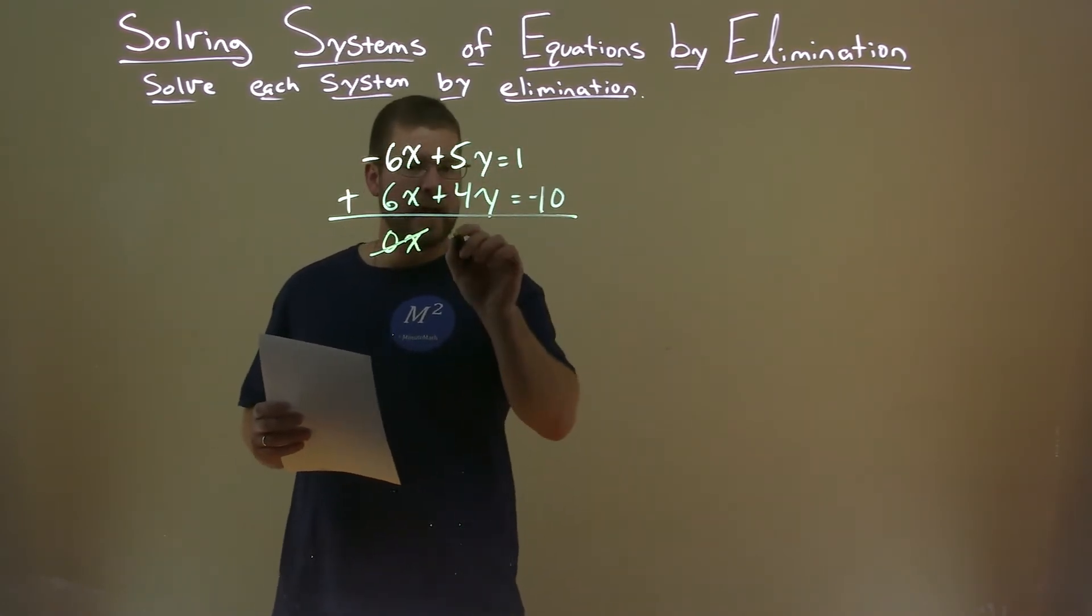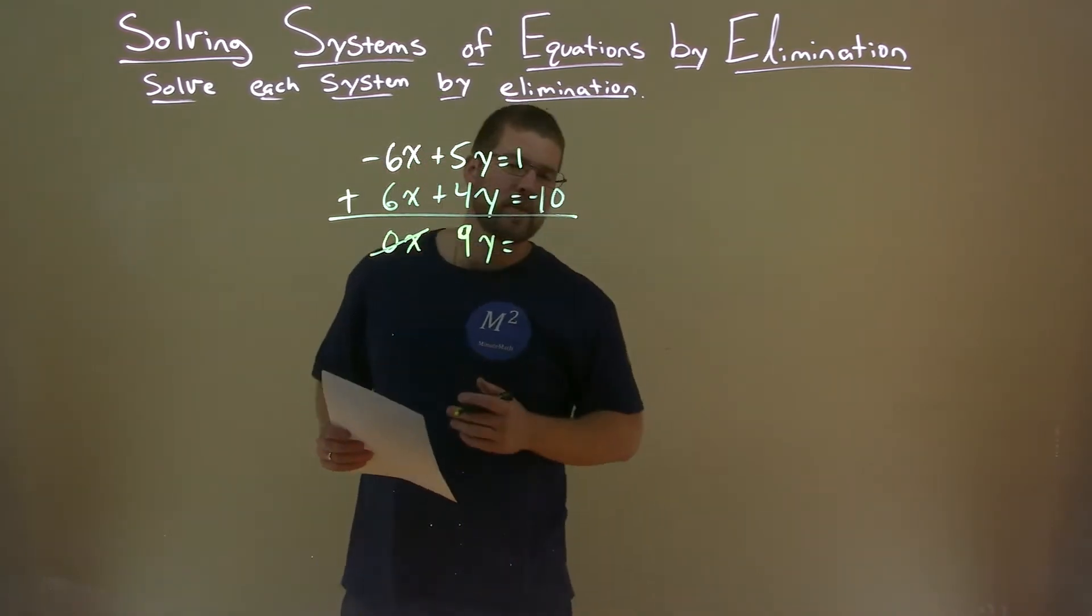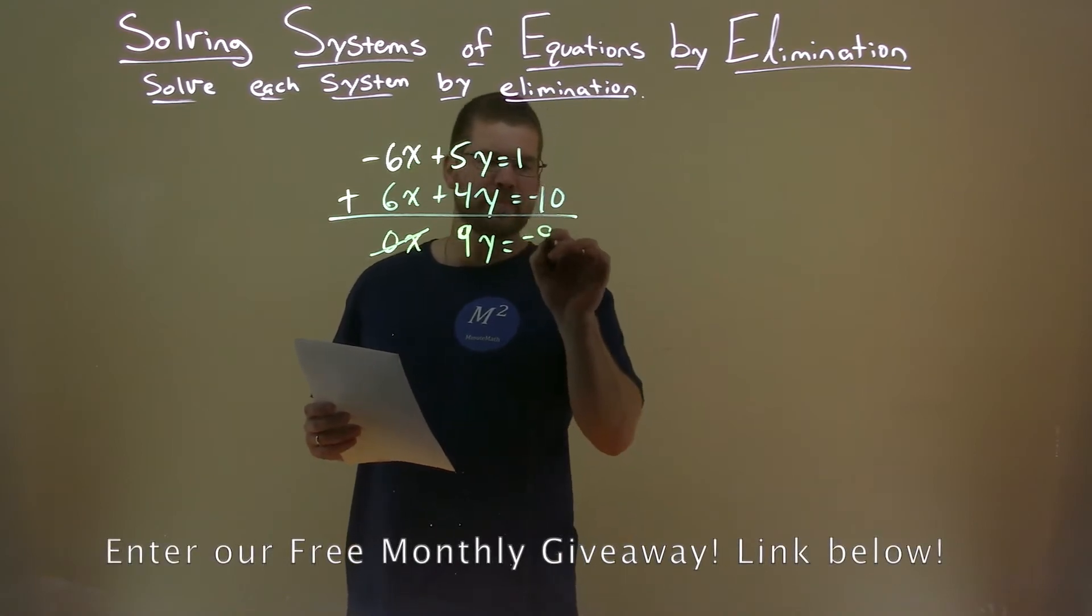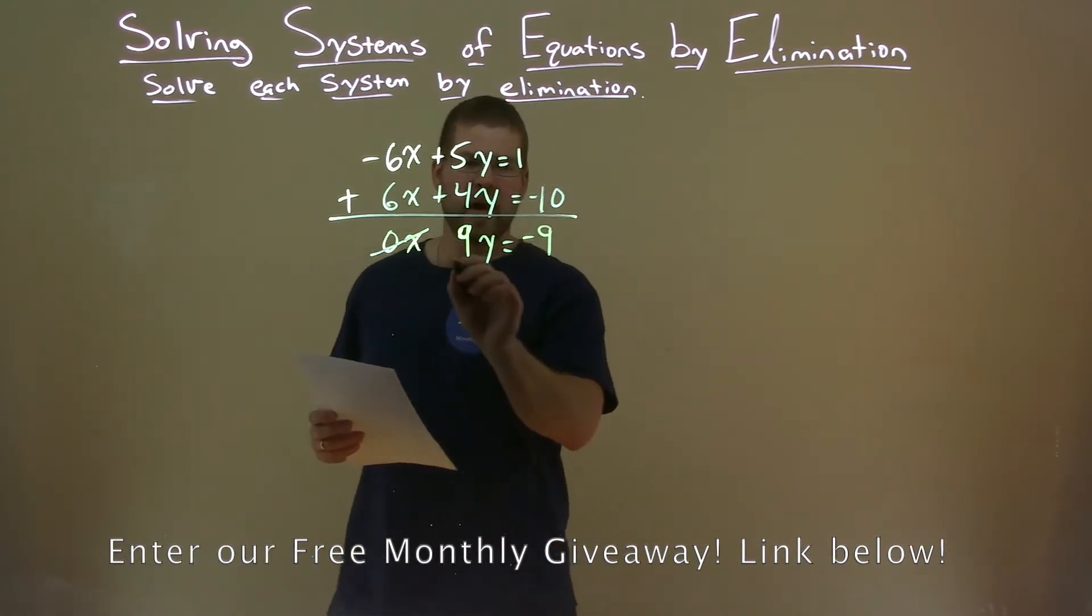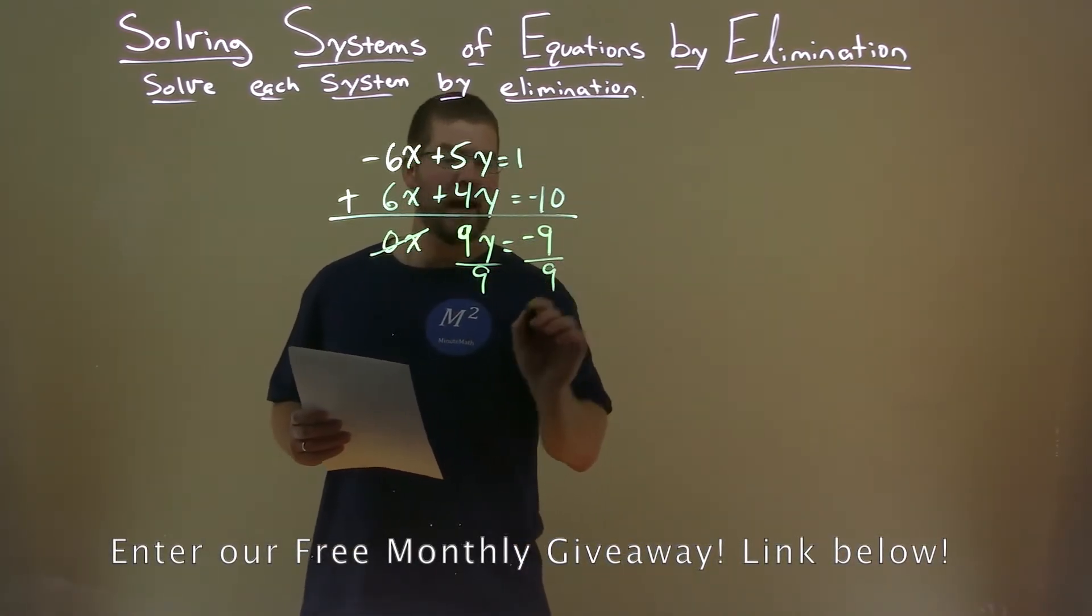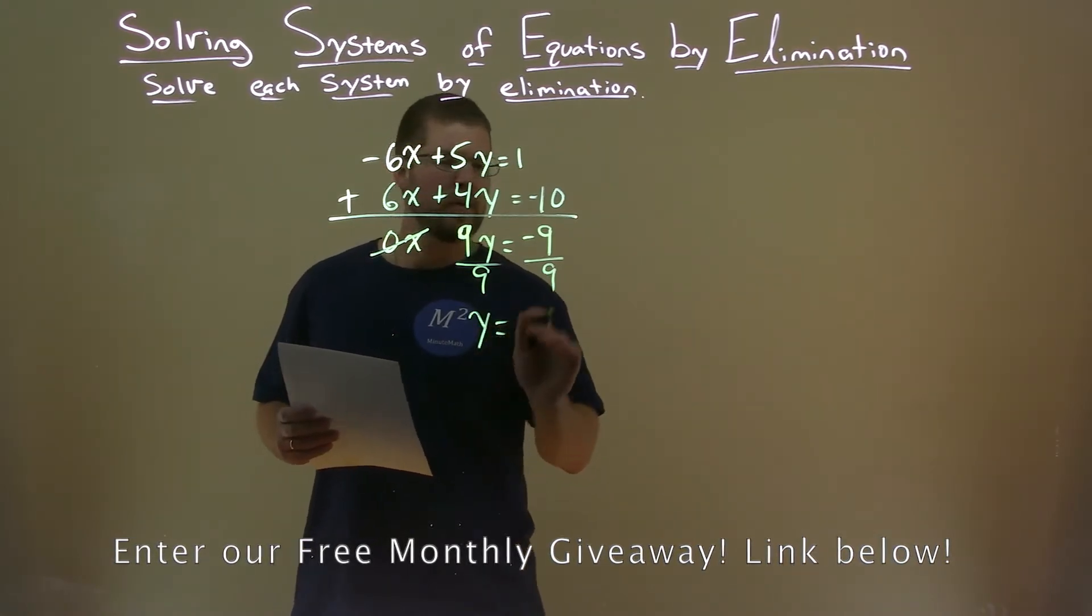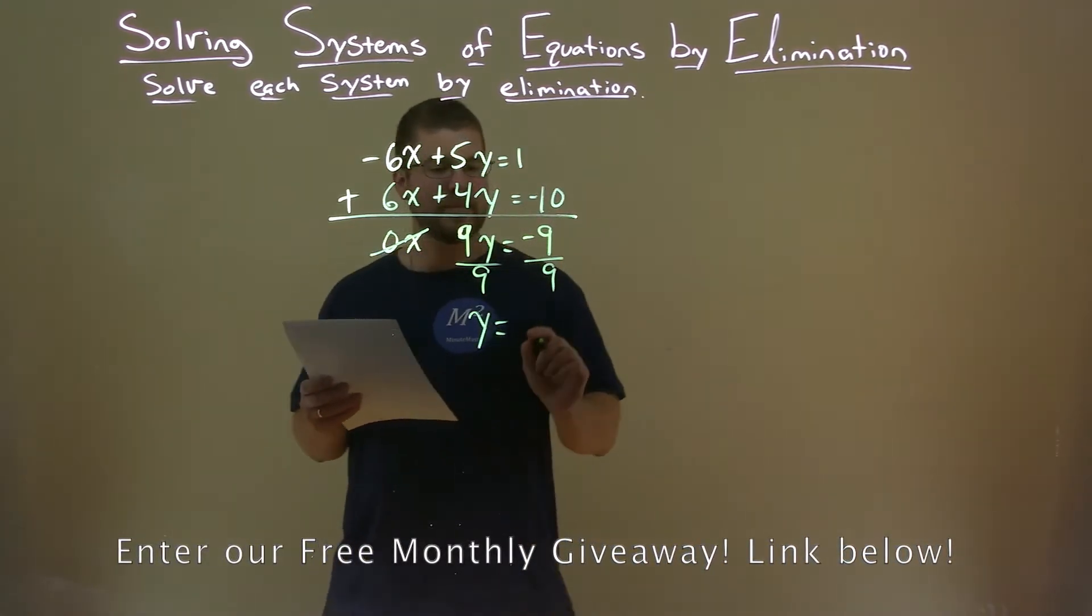5y plus 4y now is a positive 9y. And 1 plus negative 10 is negative 9. Divide both sides by 9 here, and we get halfway there. Y is by itself. Negative 9 divided by 9 is negative 1.